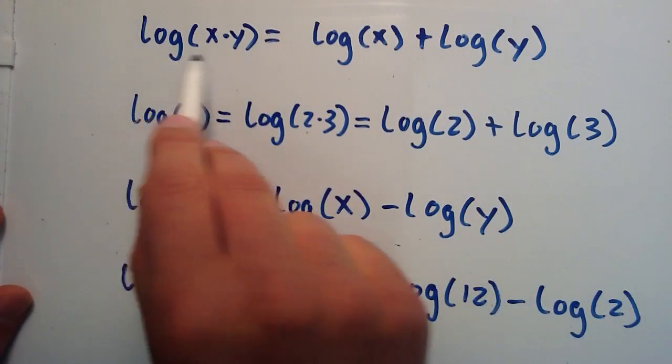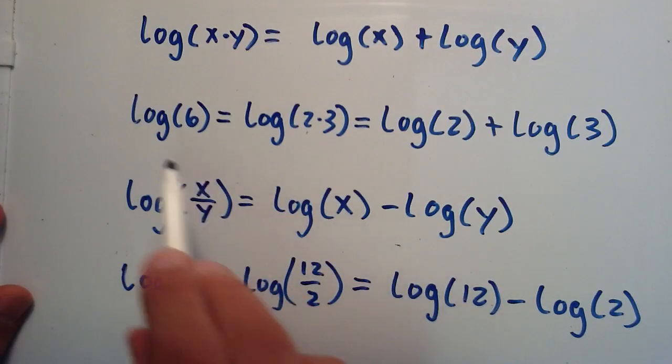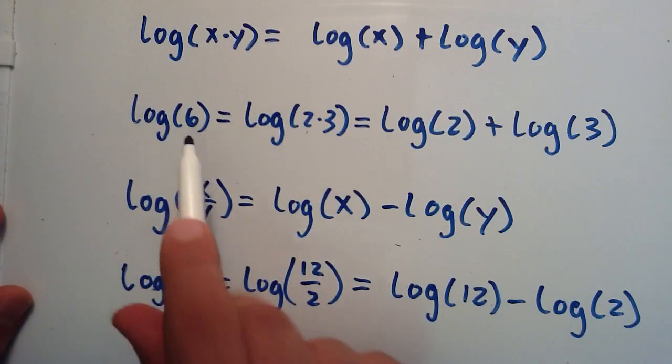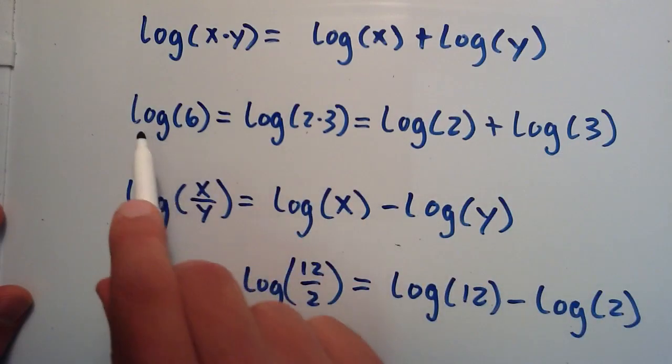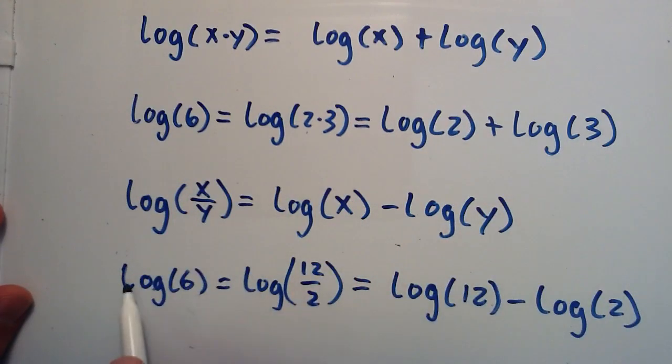So by using this property and this property here, I was able to rewrite log of 6 in two different ways. The log of 6 is equal to the log of 2 plus the log of 3, and the log of 6 is also equal to the log of 12 minus the log of 2. So these properties are really useful when it comes to manipulating logarithms.